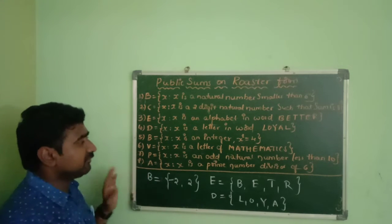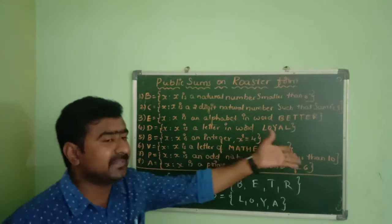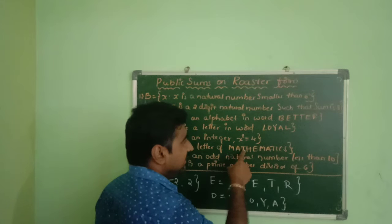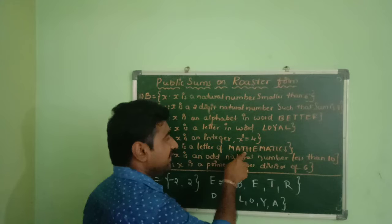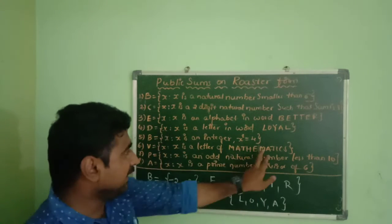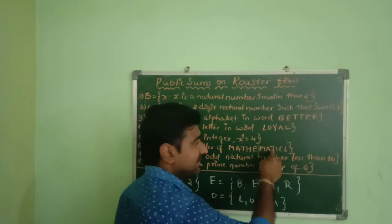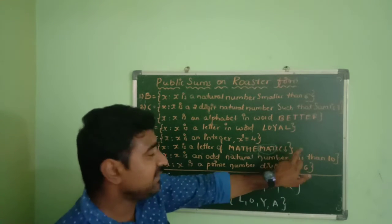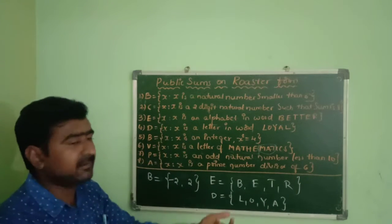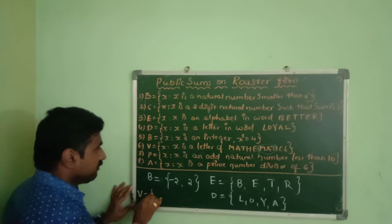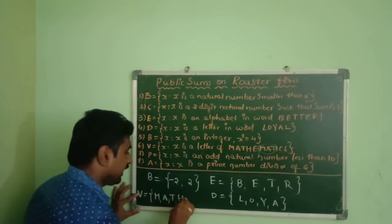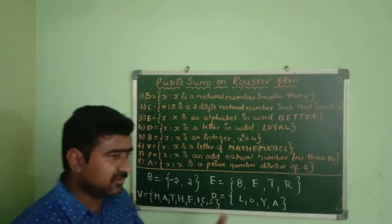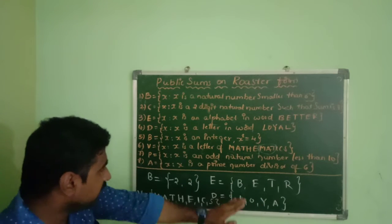Sixth sum: x is a letter in the word MATHEMATICS. The letters are M, A, T, H, E, M, A, T, I, C, S. Removing repeated letters — M, A, T appear more than once — we write each only once. So the roster form is {M, A, T, H, E, I, C, S}. Third, fourth, fifth, and sixth sums all follow this pattern.